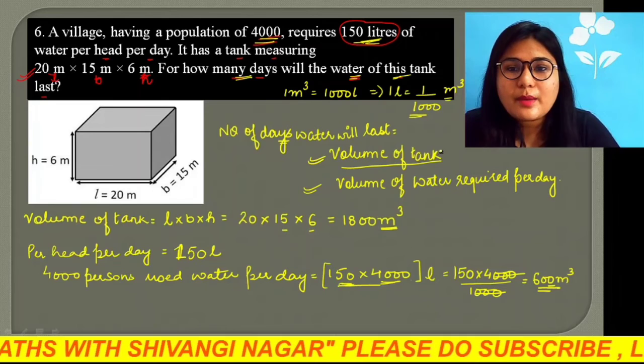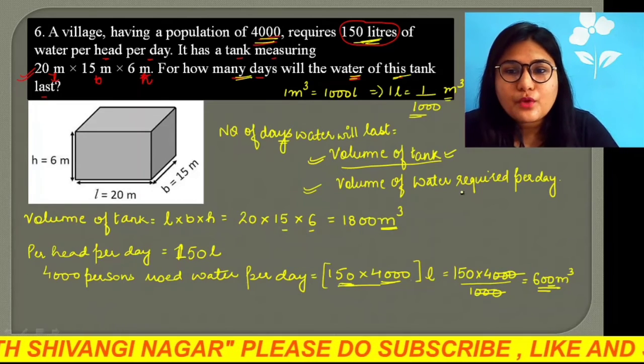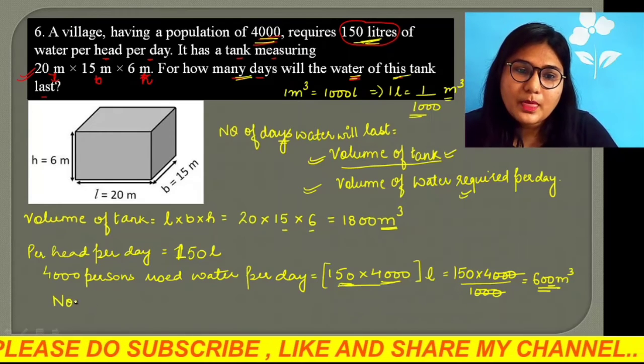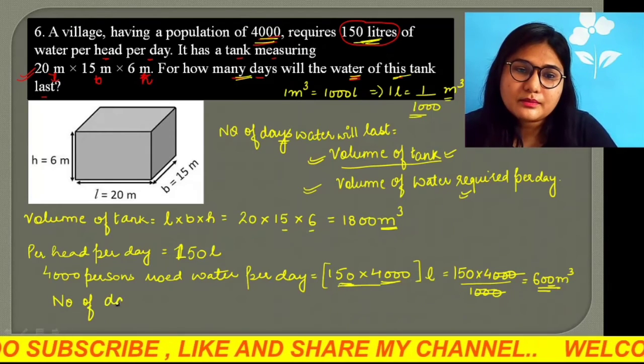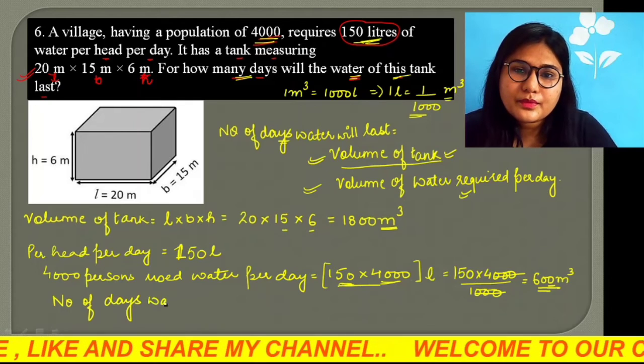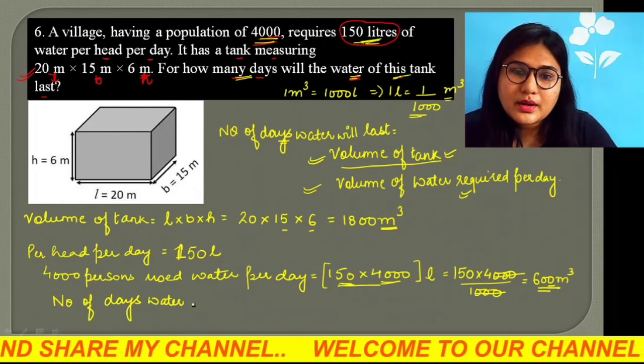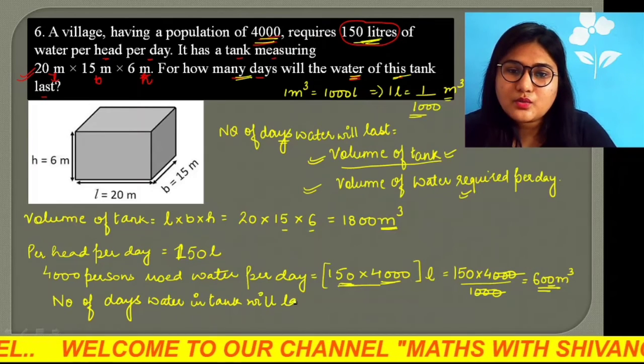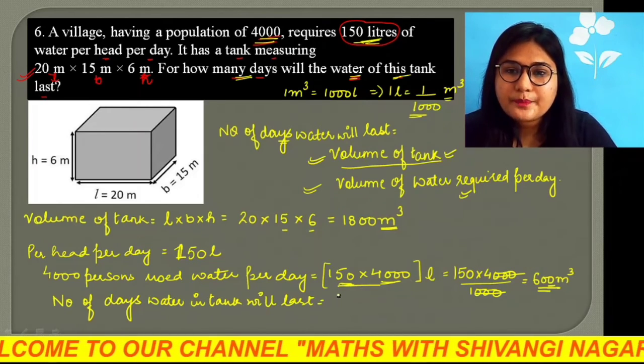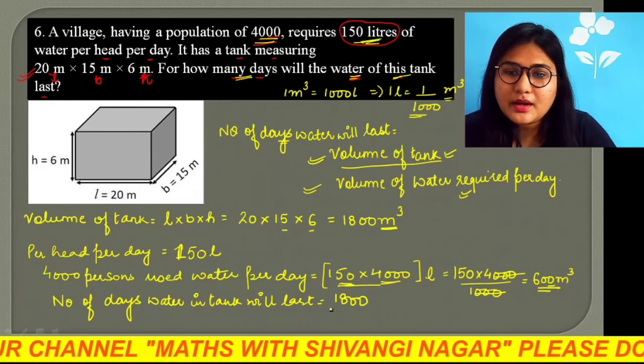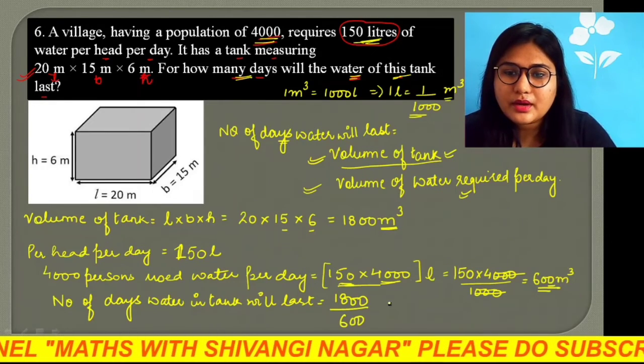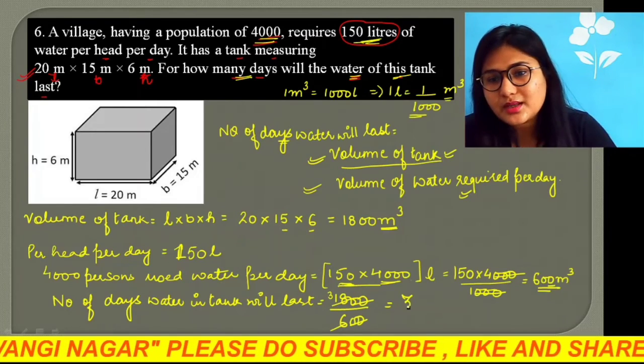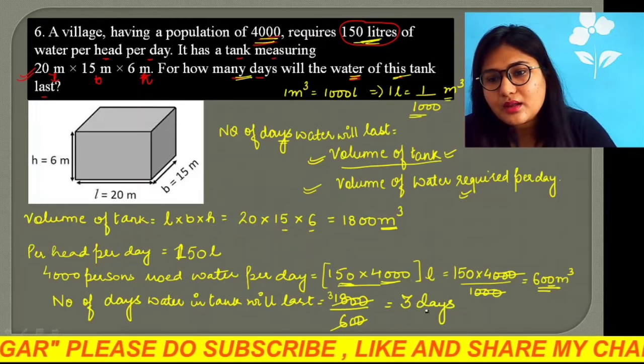So, we are asked the number of days. So, now we have volume of water required per day, that is 600. So, just we have to divide. So, number of days water in tank will last is what? It is nothing but volume, that means 1800 upon 600. So, 20 to 20 cancel, 16 cancel. 18 how many times? 3 times. So, answer is what? 3 days.